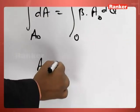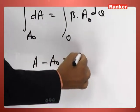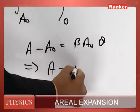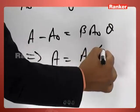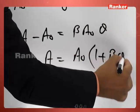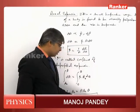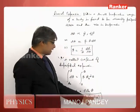We have A minus A naught is equal to beta times A naught theta. So A is equal to A naught times 1 plus beta theta. This is how the area varies with rising temperature.